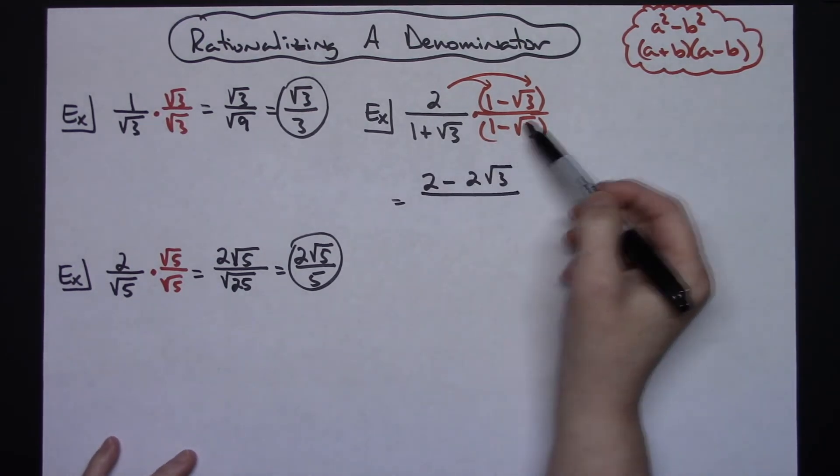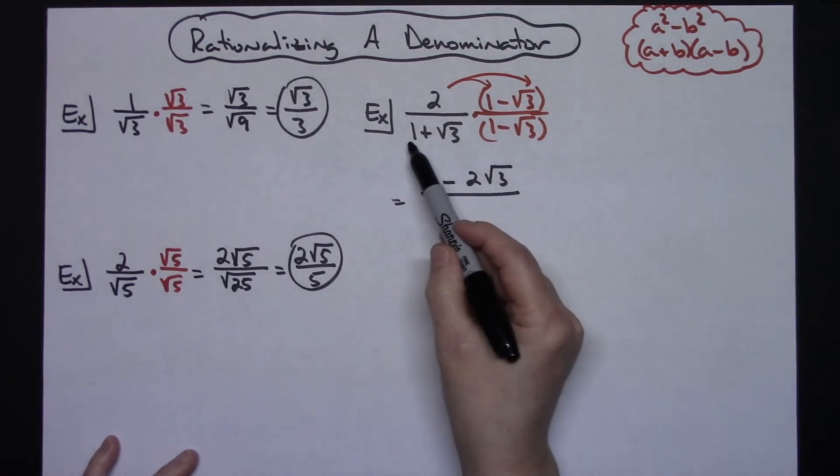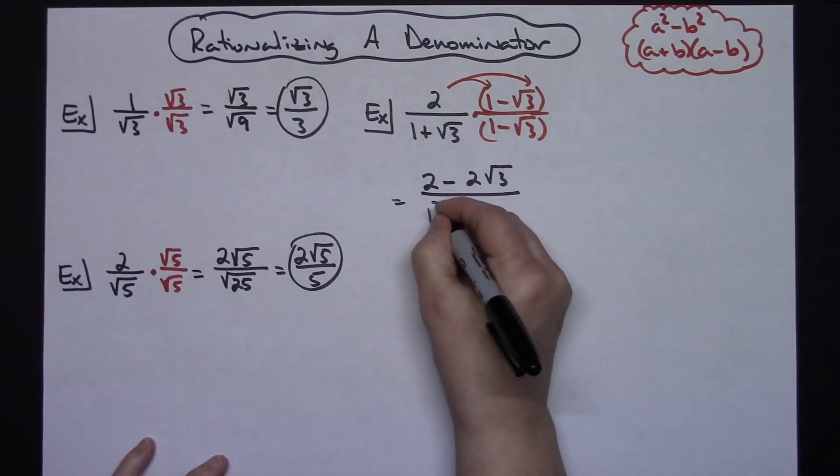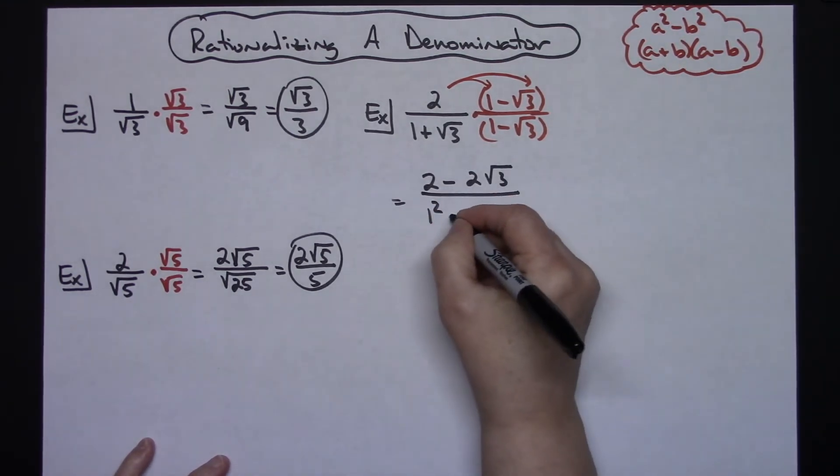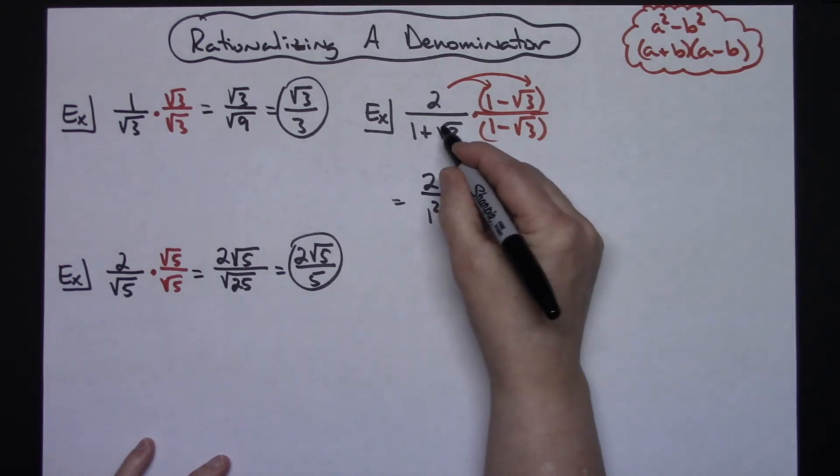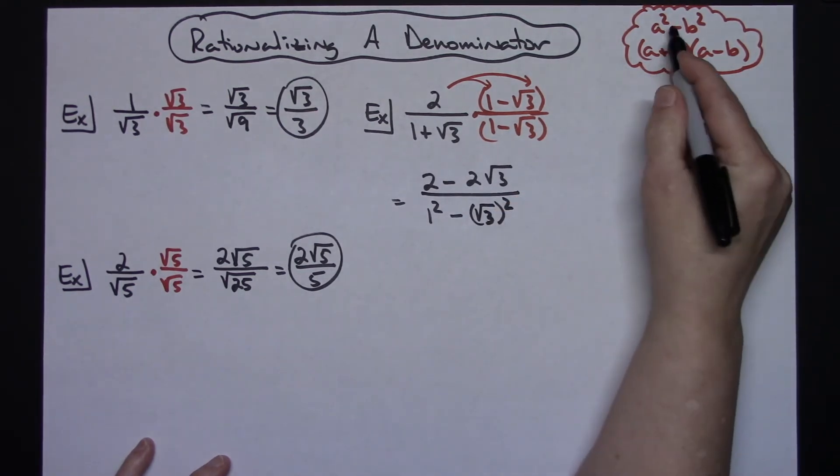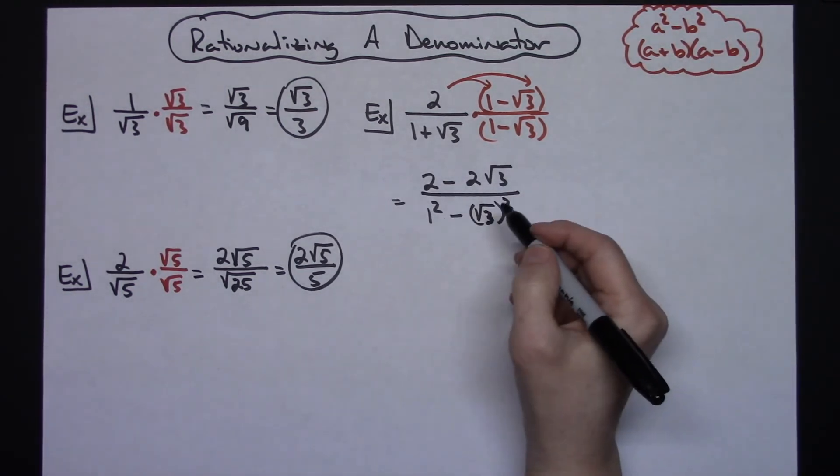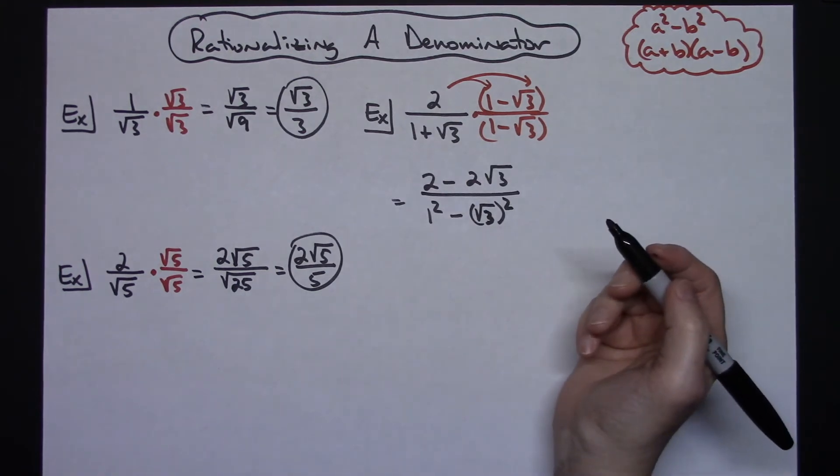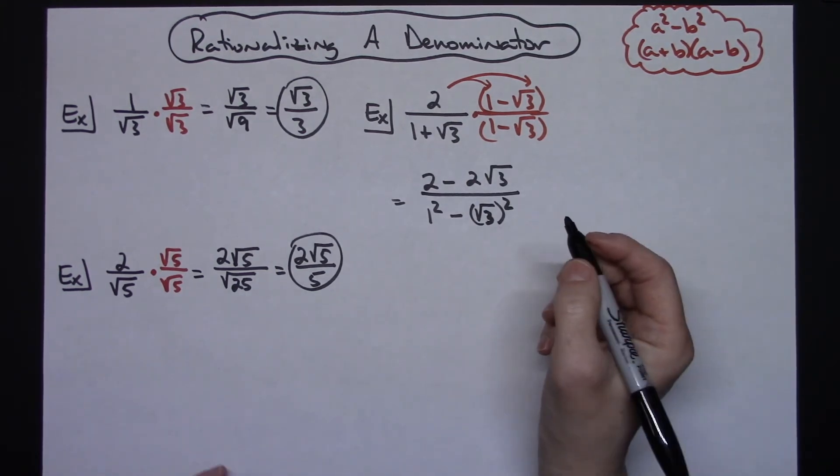Now on the bottom, since I know that this is going to be the difference of two squares, all I'm going to do is square the first term, which is 1 squared. I'm going to automatically put a minus sign in, and then I'm going to take square root of 3, square root of 3, and square that one because that's what we do here. Square the first one, square the second one. That's going to let me do that without having to foil that bottom out. It's going to multiply a little bit easier there.